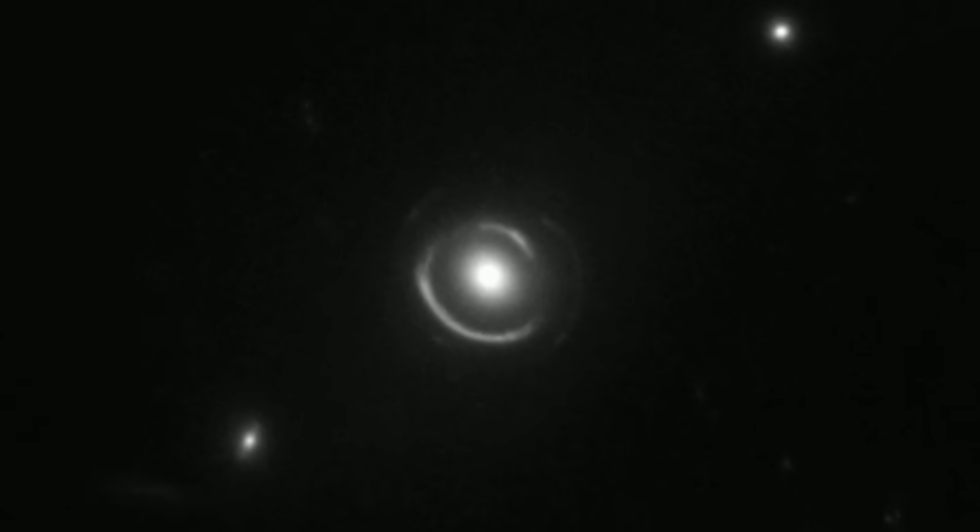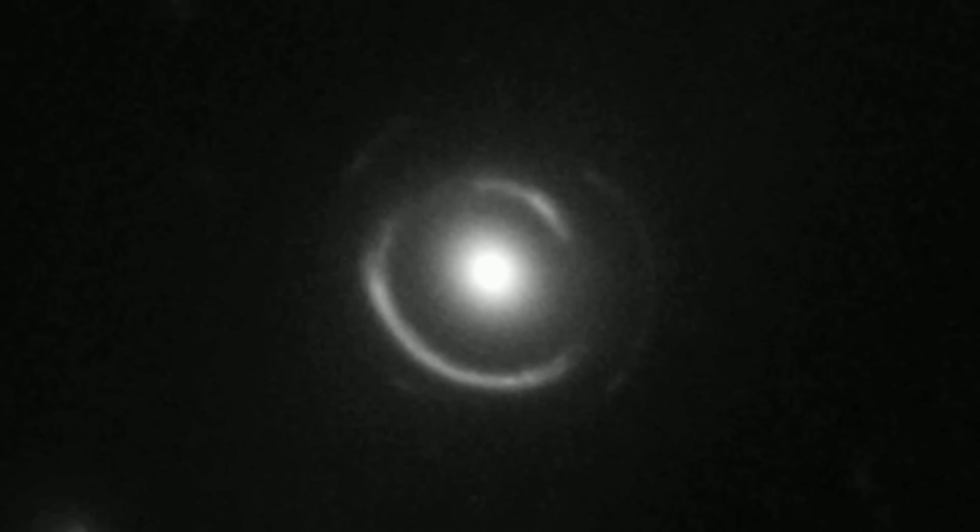But when the alignment is slightly off, we see partial arcs or multiple distorted images. These are known as Einstein arcs.